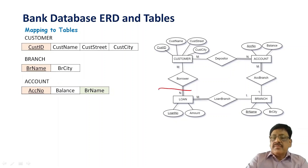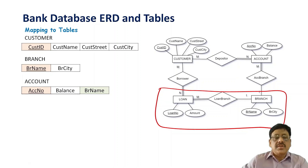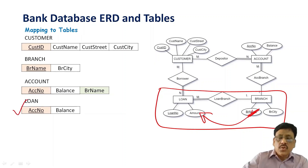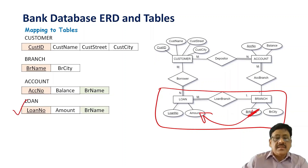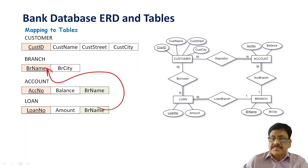Similarly, if you look at branch and loan, that is binary one-to-many from branch to loan. You create a relation for the loan, and because of one-to-many, include the primary key of the one side — branch name — as a foreign key in the relation of the loan, which is the many-side relation. We include branch name as a foreign key, and this should refer to the primary key branch name of the branch table.